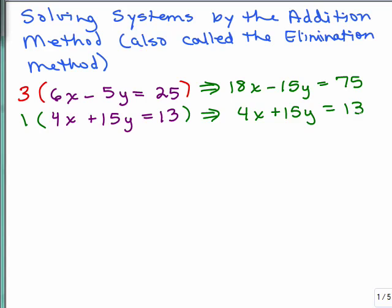The goal was to either get the Y terms to be opposites or the X terms to be opposites for coefficients. So now when I add the left side together, I have 22X equals, and that's the idea - I eliminated the Y variable. That's why this is sometimes called the elimination method. Now I have to finish solving for X. Divide both sides by 22.